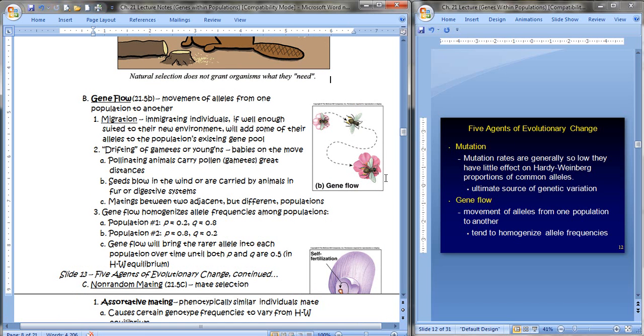You can get drifting of gametes or youngins. Babies will be on the move. For example, pollinating animals can carry pollen or gametes great distances. Seeds can blow in the wind or could be carried by animals in fur or digestive systems. Or you could get mating between two adjacent but different populations. So just remember that gene flow basically happens when a population gains or loses alleles by genetic additions and or subtractions from the population.